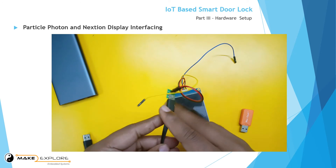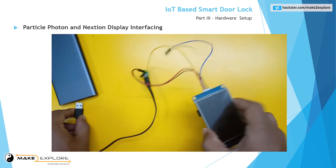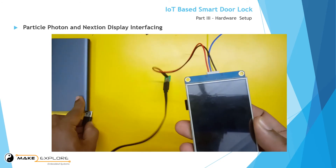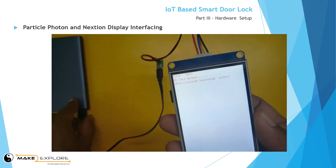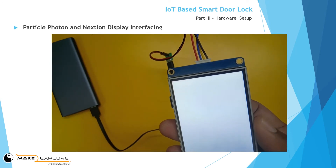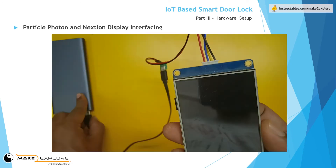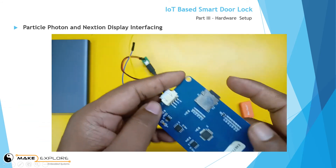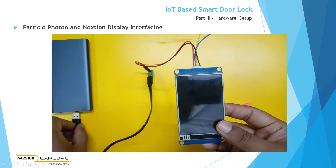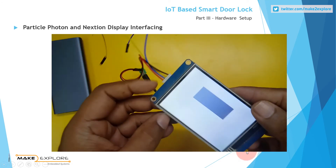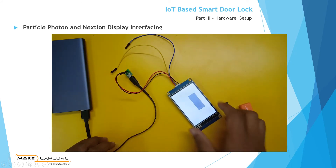As soon as you connect power to the Nextion display, the flashing process will start. You can see its status and log on the display itself. In this process, the TFT file on the SD card will get transferred to the EEPROM of the Nextion display. After flashing completes successfully, remove power first and then remove the SD card. Do not forget to remove the SD card, because if you leave it in, the flashing process will start again every time you connect power. In this way you can program and flash the Nextion display with your graphical user interface.